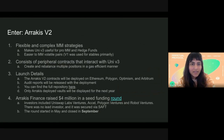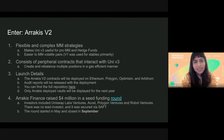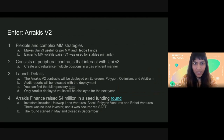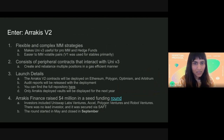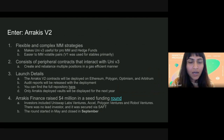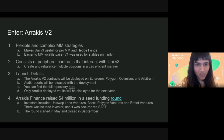Before getting into how Arrakus V2 actually works, some things remain the same. It still consists of peripheral contracts that interact with UniV3, so everything that Arrakus V2 can do, you can do directly on UniV3 — it just makes it easier and more automated, and it primarily enables complex market-making strategies.